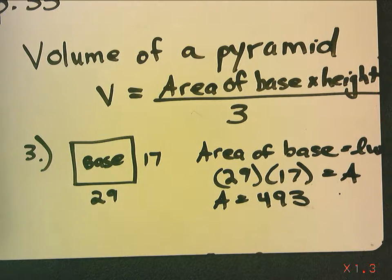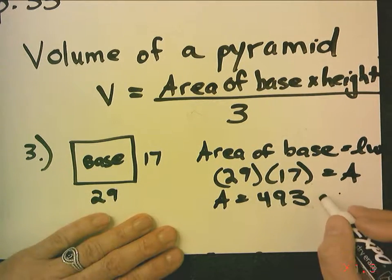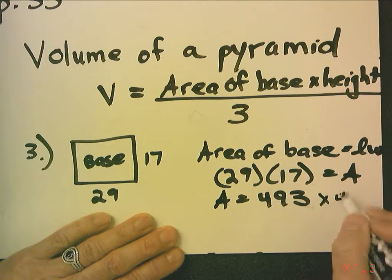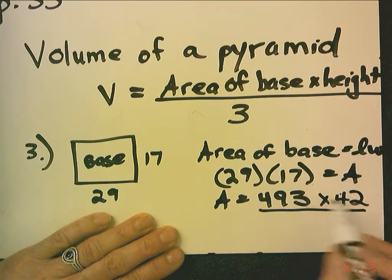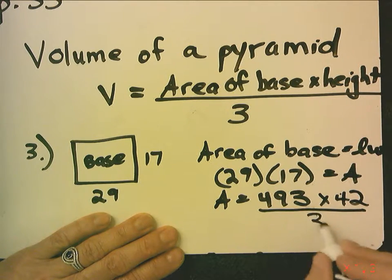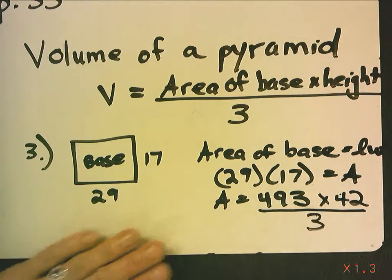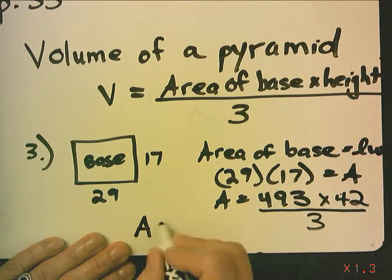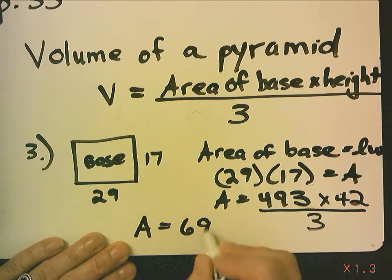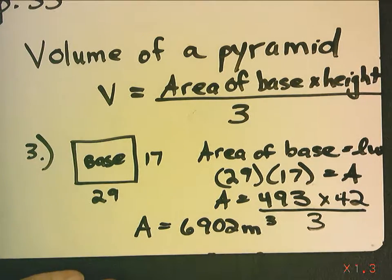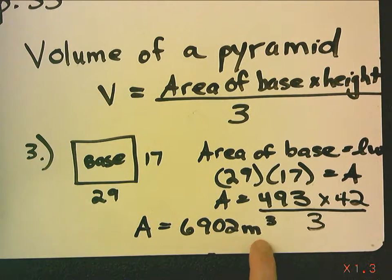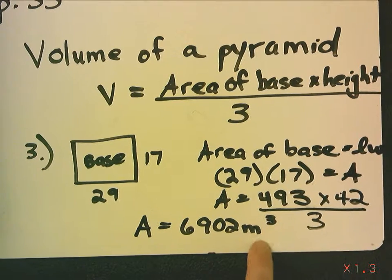Now, I have to multiply 493 times the height. In this case, the height is 42. So, I have the area of the base times the height. And now, I have to divide this by three. And that ends up being 6,902 meters cubed. So, volume is always in cubic measurement.